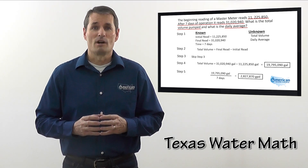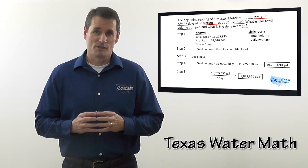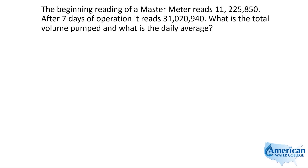I'm Joe Kirshner with American Water College. Watch as I use my five-step approach to solve this problem. The beginning reading of a master meter reads 11,225,850. After seven days of operation it reads 31,020,940. What is the total volume pumped and what is the daily average?